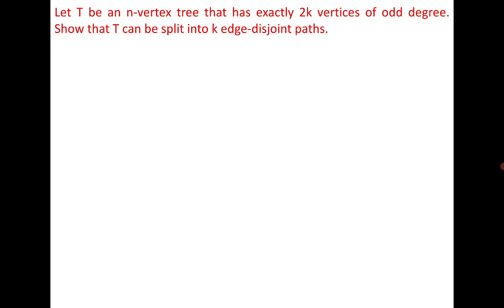A very interesting problem: let T be a tree that has exactly 2k vertices of odd degree. We prove by induction. For k=1, there is only one vertex of odd degree and no paths. For k=2, there are two vertices of odd degree and one path — this is the base induction step.